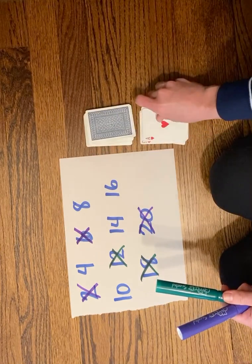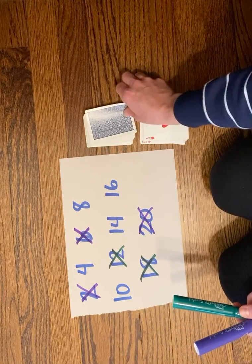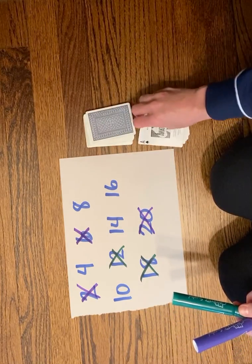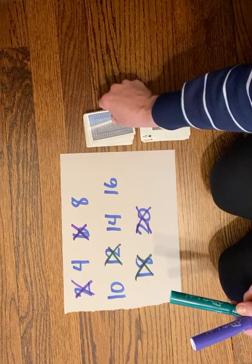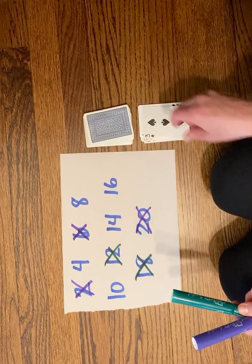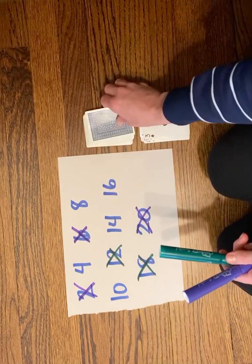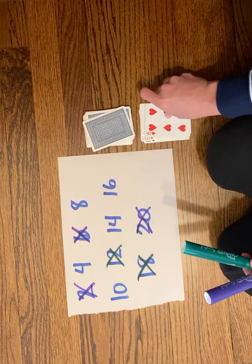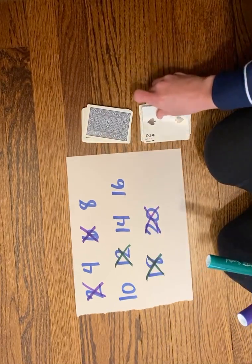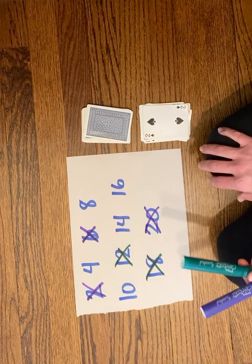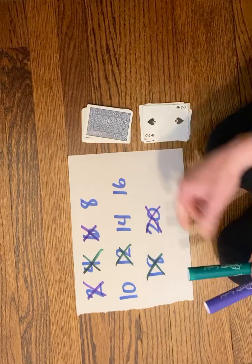Green gets one times two, already taken by purple, so they lose that turn. Purple gets one times two again. Green gets two times three, already taken, so we lose a turn. Purple, six times two, taken. Green, two times two is four, so green gets to take the four.